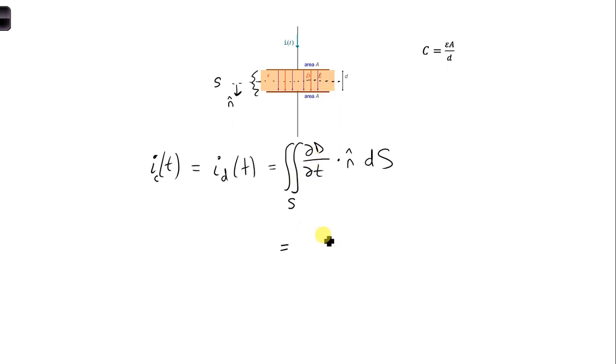So this integral then just becomes multiplication times A. So we get dD/dt times A, the area of that surface, the area of the capacitor plate.